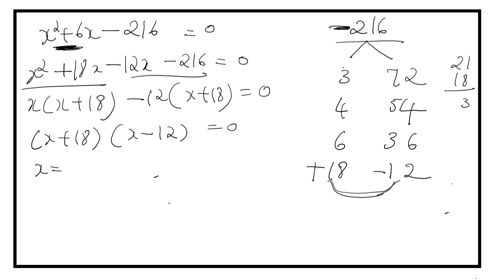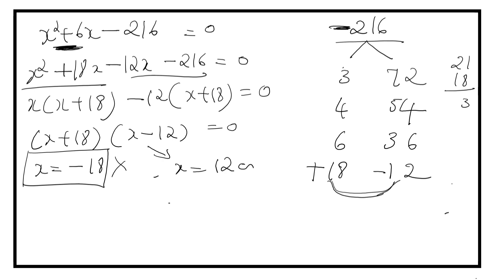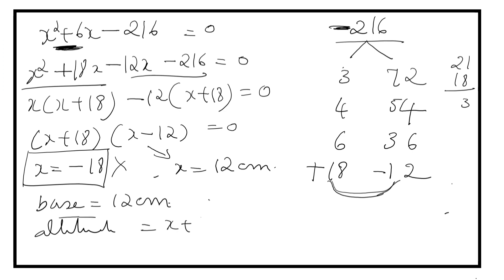It implies that X equals minus 18, which is not possible because the measure of a triangle cannot be negative. The height and base must be positive. So X equals 12 centimeters. Therefore the base is equal to 12 centimeters, and the altitude, that is the height, is X plus 6, which is 12 plus 6 equals 18 centimeters.